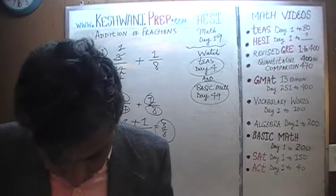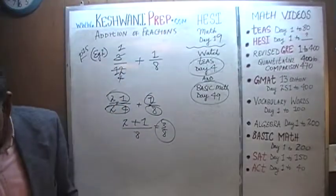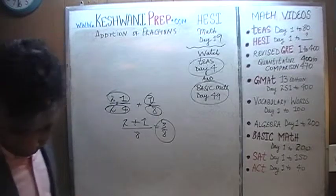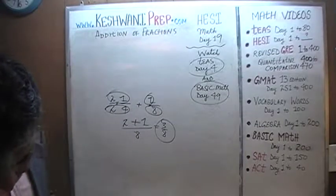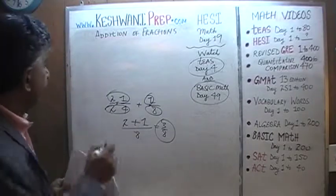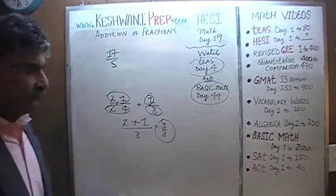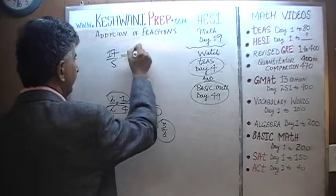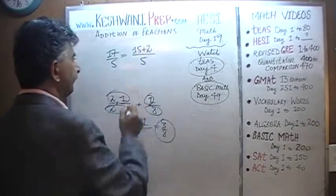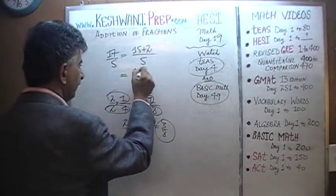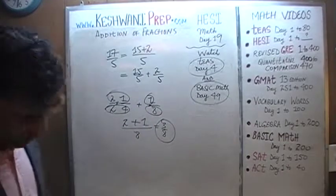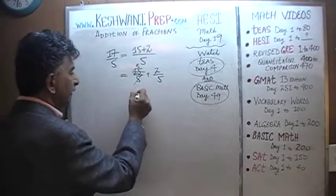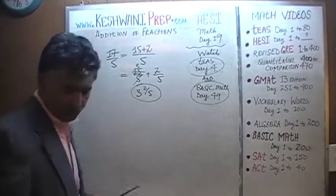Let's do the next one. They are giving us an improper fraction and asking us to convert it into a mixed number. The problem is 17 over 5. Since 17 is more than 5, it's an improper fraction. We break up 17 into 15 plus 2, giving us 15 over 5 plus 2 over 5. 15 divided by 5 is 3, so the answer is 3 and 2 fifths.